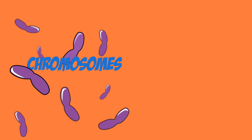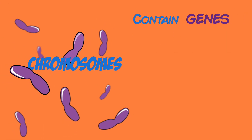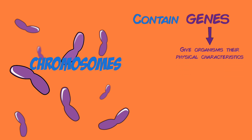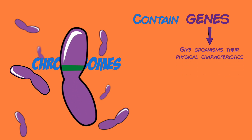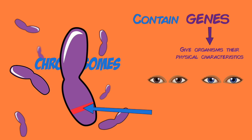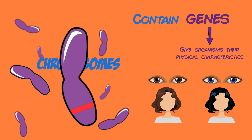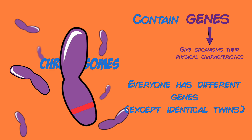Each chromosome carries a large number of genes which give every organism its own physical characteristics. For example, one section of the chromosome would be the gene that gives a person brown or blue eyes, and another section could give a person natural brown or black hair. All of a person's genes make them who they are, and every single person in the world has different genes to each other.